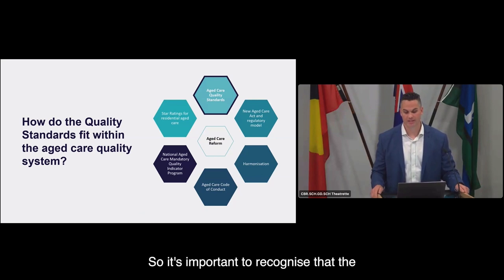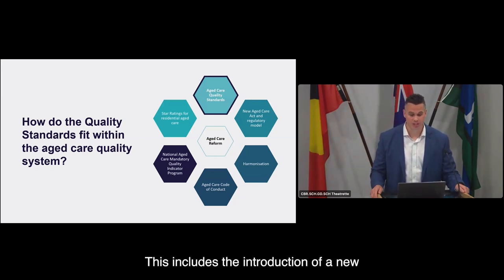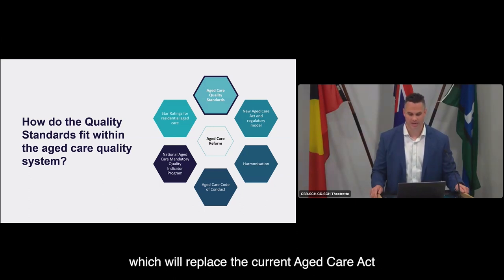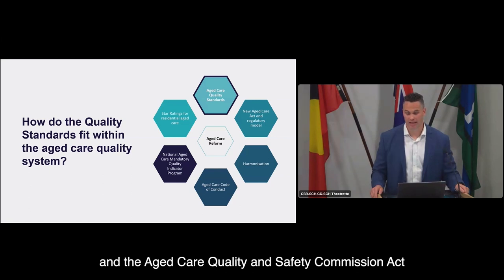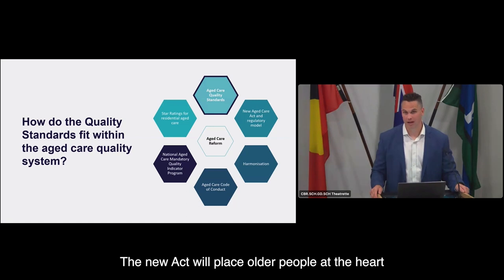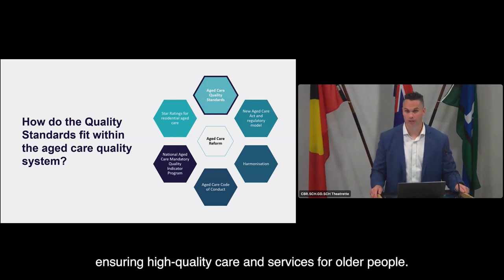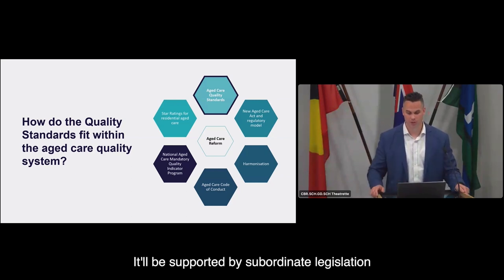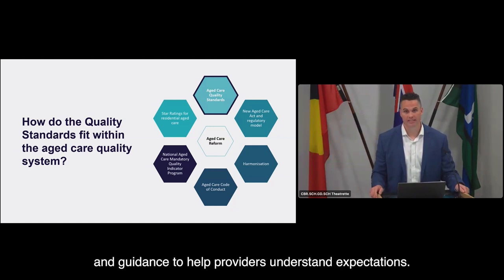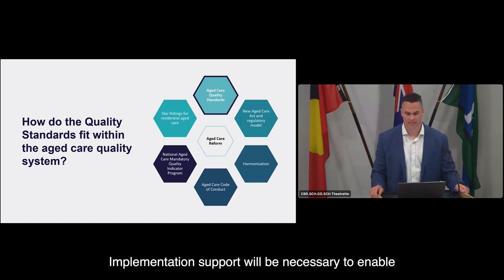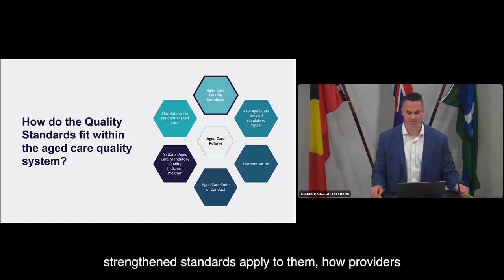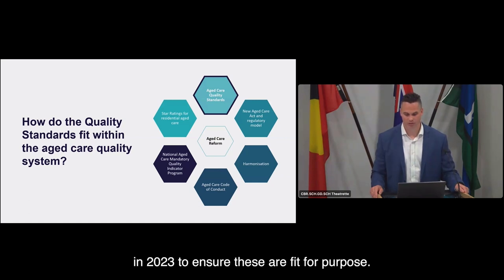It's important to recognise that the standards are just one part of a significant program of aged care reform being delivered over 2021 to 2025. This includes the introduction of a new regulatory model set out in a modernised, person-centred and rights-based Aged Care Act, which will replace the current Aged Care Act. The new Act will place older people at the heart of the system and will be supported by subordinate legislation and guidance to help providers understand expectations. Implementation support will be necessary to enable existing providers to understand the regulatory changes, and further consultation will be undertaken on this in 2023.